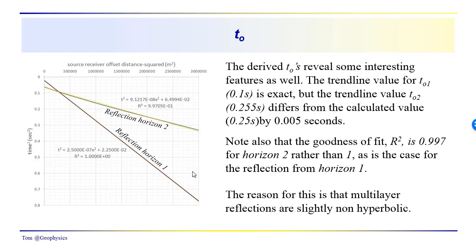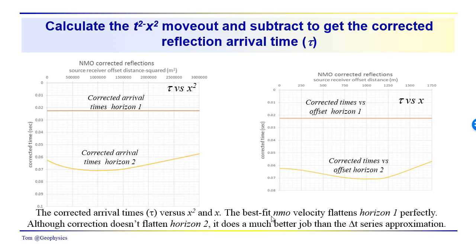The basic reason — and we'll have to come back to this later — is that reflections from multiple layers are slightly non-hyperbolic. So unless you're dealing with a layer with almost constant velocity, the reflection response will not be perfectly hyperbolic. To be accurate, the reflection response is slightly non-hyperbolic, and this is probably a fairly good illustration of some of the subtlety in that distinction.